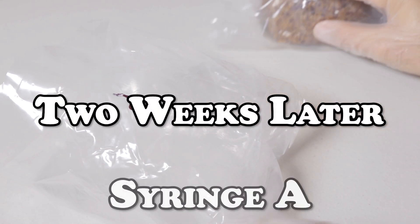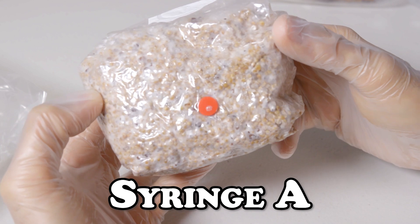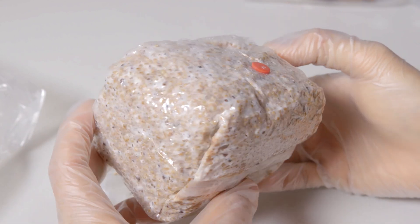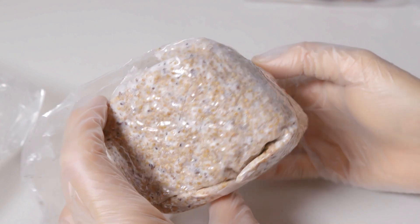Here we are two weeks later and we're pulling out bag A. As you can see there's mycelium everywhere - the front, the bottom, the sides, the back. I would say this bag is fully colonized and ready to be added to some substrate.